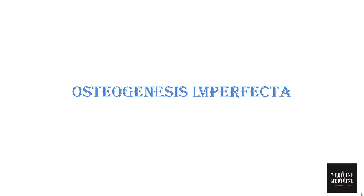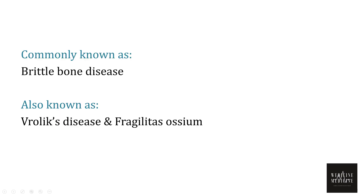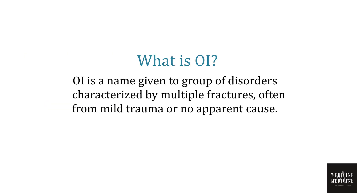Welcome to another video on osteogenesis imperfecta. Osteogenesis imperfecta is commonly known as brittle bone disease. It is also known as Brolic's disease or fragilitas osseum. The term osteogenesis imperfecta itself indicates imperfect bone formation, and it is a name given to a group of disorders characterized by multiple fractures, often from mild trauma or no apparent cause.